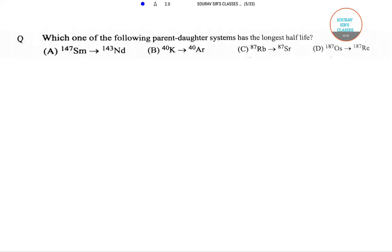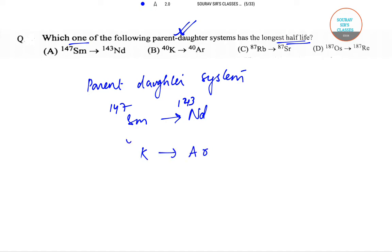So the next question is: which one of the following parent-daughter systems has the longest half-life? So let us find out. I will write the parent-daughter systems one by one, and then I will make a separate column. And what I will write in that separate column is the half-lives. So let me jot this down first.